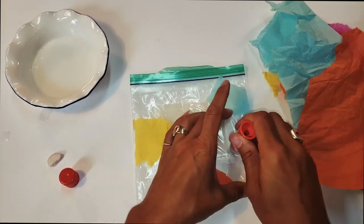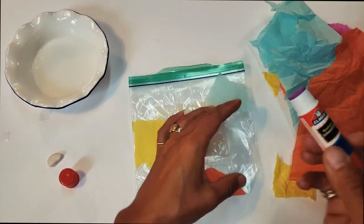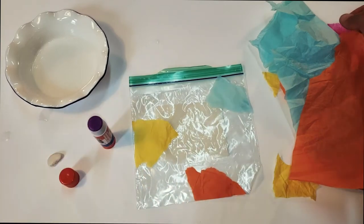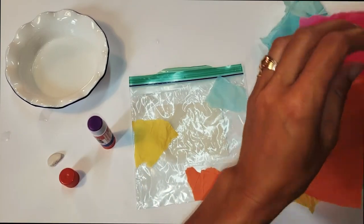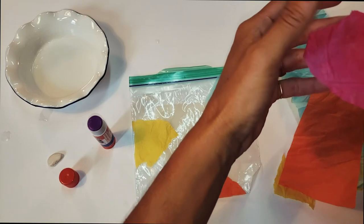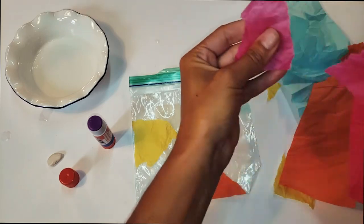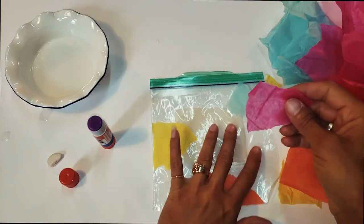You can use any color or shape of tissue paper to make an abstract pattern or a landscape scene. They should be smaller than the baggie and they can overlap in places. Whatever you want that makes you happy.